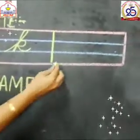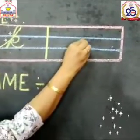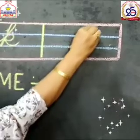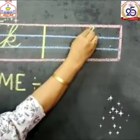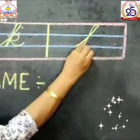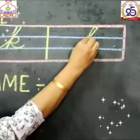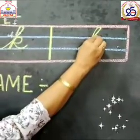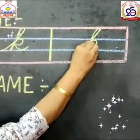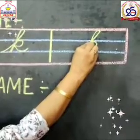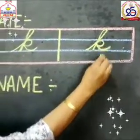Now once again make an under curve. Come back. Then go up. Make a circle. Touch it here. Then make a curve like this.